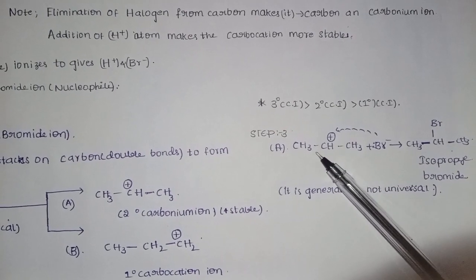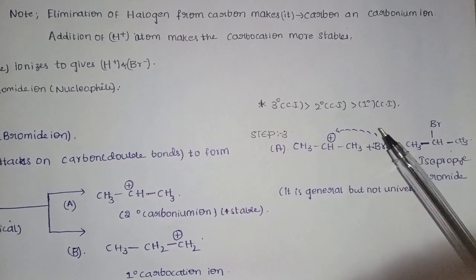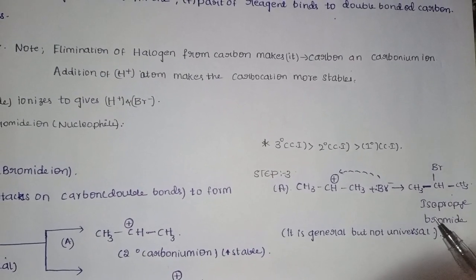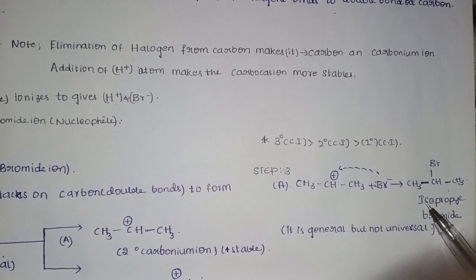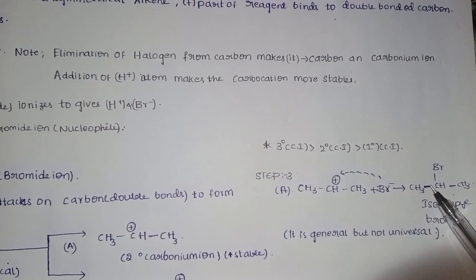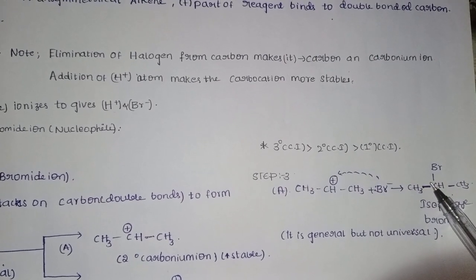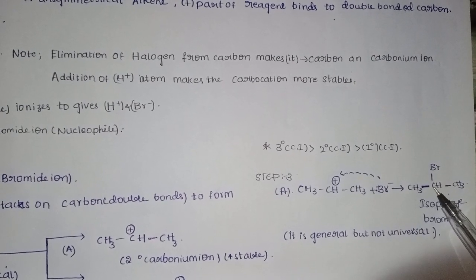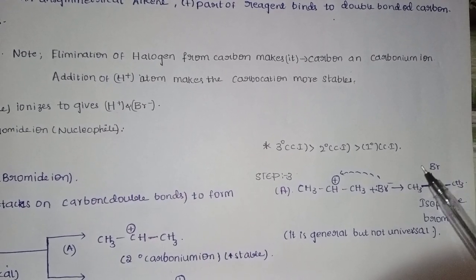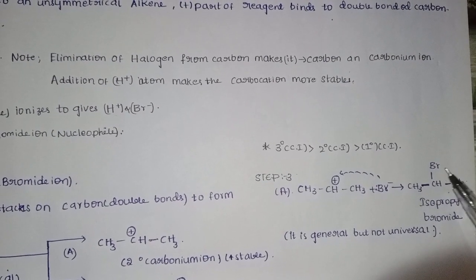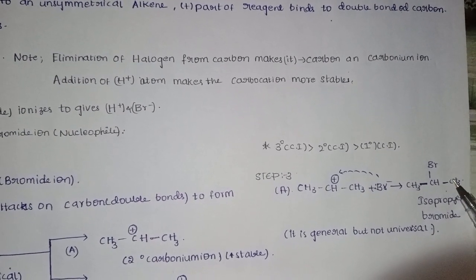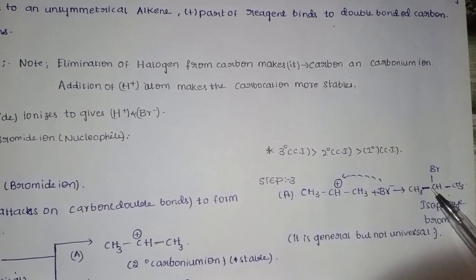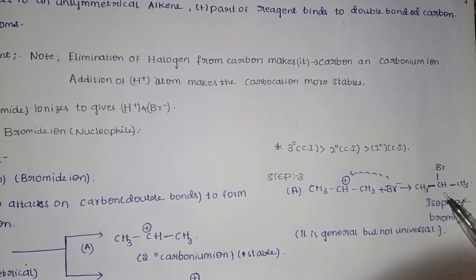In order to form the carbocation, bromine (Br⁻) attacks at the secondary carbon position. So isopropyl bromide is formed — because bromine adds to the secondary carbon position, and there are 3 carbons making it propyl, with bromine attached at the secondary carbon, it is called isopropyl bromide.